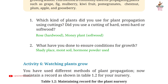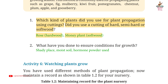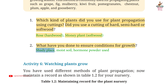Page 21, Question 1: which kind of plants did you use for plant propagation using cuttings — hard, semi-hard, or softwood? Answer: rose — hardwood; money plant — softwood. Question 2: what have you done to ensure conditions for growth? Answer: shady place, moist soil, hormone powder used.